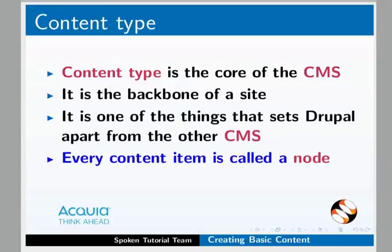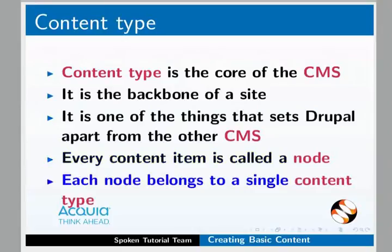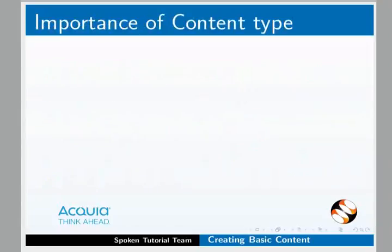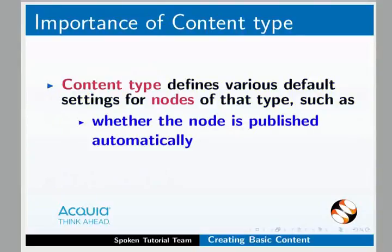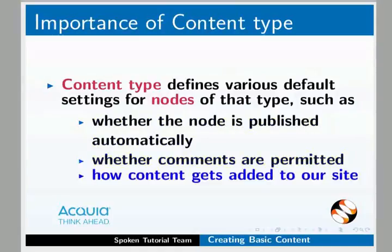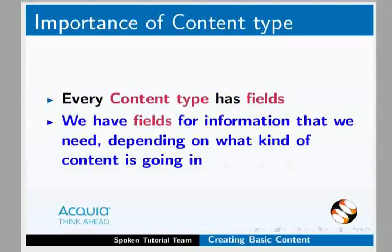In Drupal, every content item is called a node. Each node belongs to a single content type. Content type defines various default settings for nodes of that type, such as whether the node is published automatically, whether the comments are permitted, and how content gets added to our site. Every content type has fields.